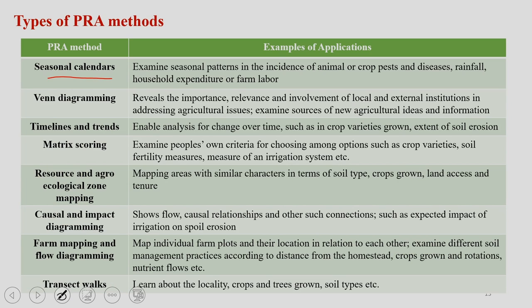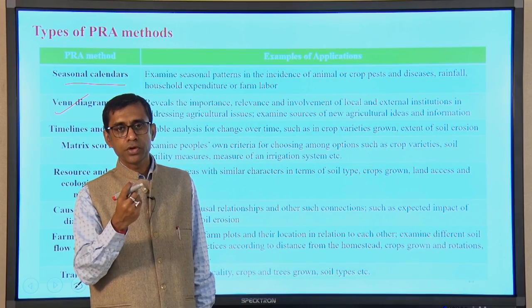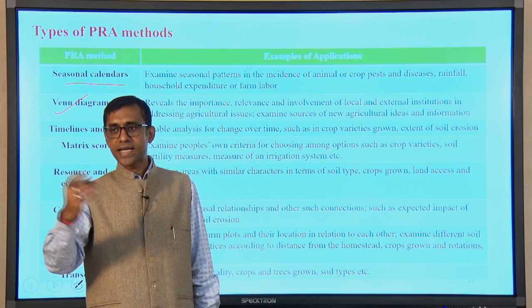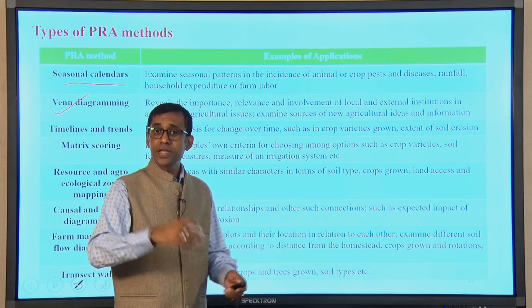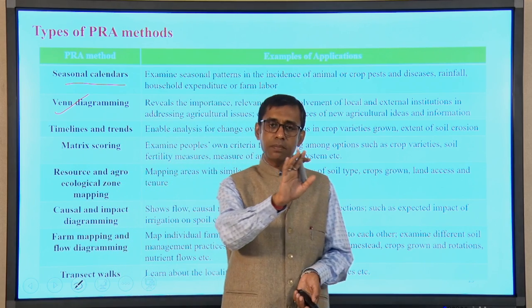Under relational methods, a seasonal calendar is largely carried out to examine the seasonal patterns of crops, pests, diseases, rainfall, and household or village activities. This gives a clear picture of how different activities come in during a season, allowing good planning of any activity in that particular area. Next, Venn diagramming reveals the importance and relevance of involvement of local and external institutions in addressing various problems and issues that exist in a particular area — agricultural, horticultural, fishery, or any kind of program.